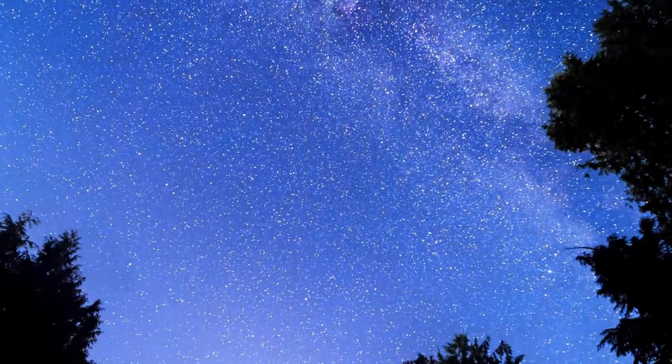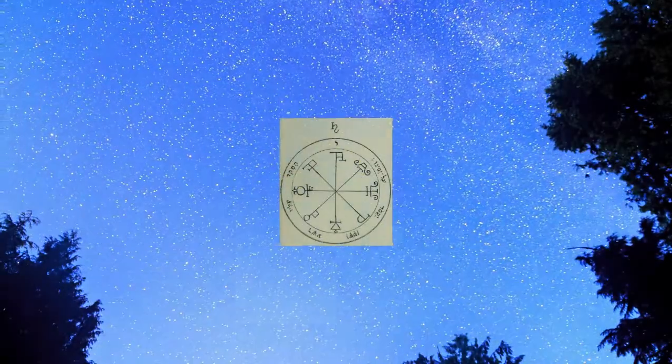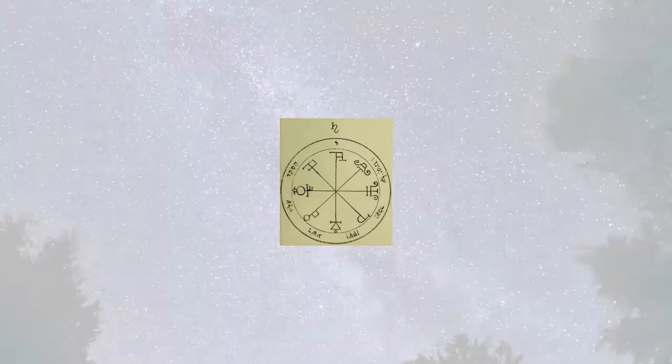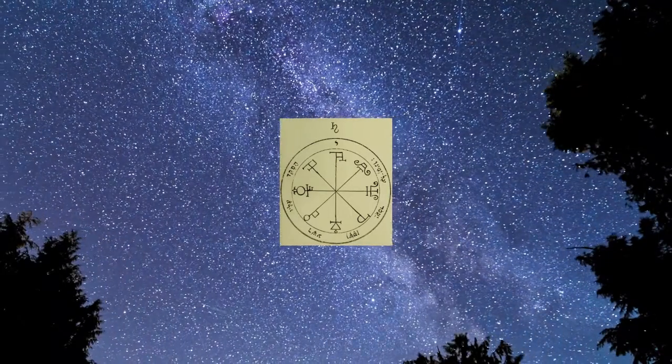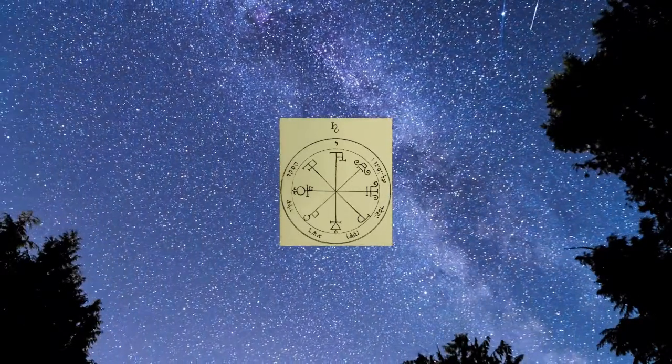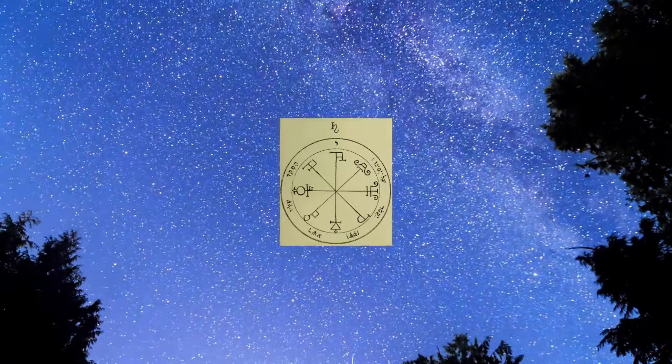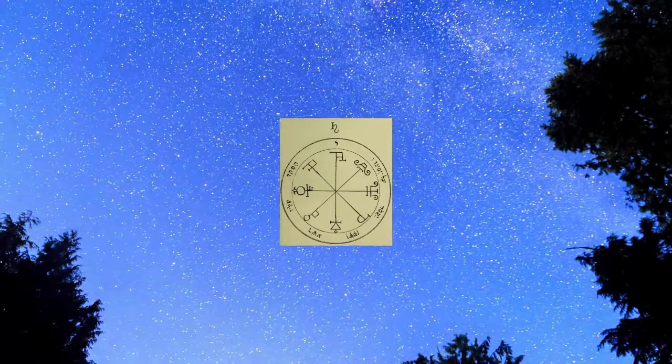The sixth sigil of Saturn. Around this sigil is each name symbolized as it should be. The person who you pronounce it against shall be pursued by demons. Written in Hebrew around it is: Set a wicked one upon them, and let the great adversary of humanity stand at their right hand.